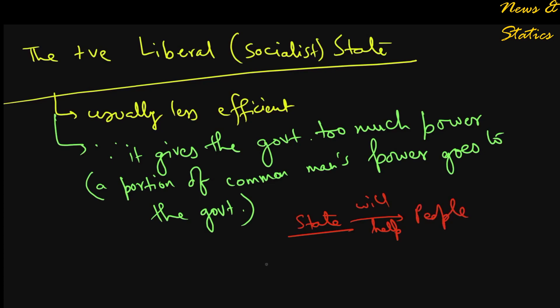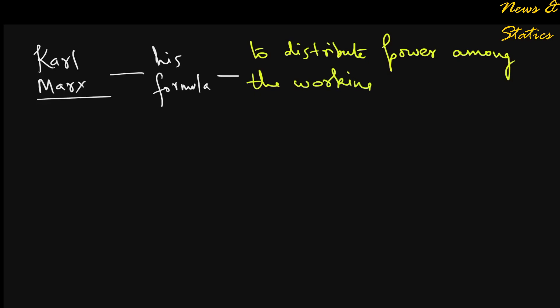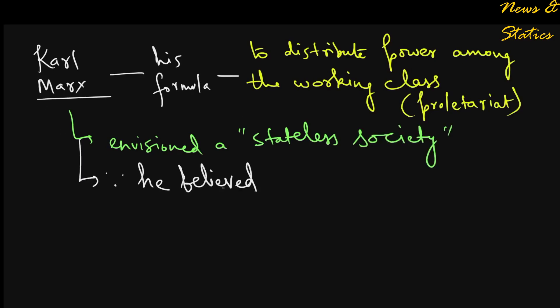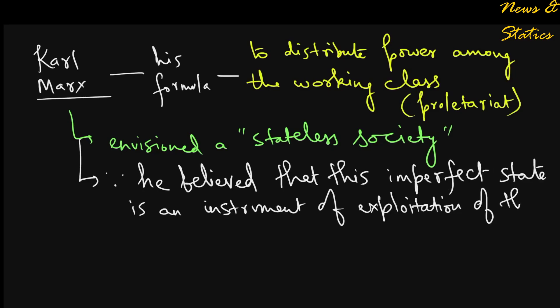Well, this disbalance of power is the cause of inefficiency. Karl Marx in the 19th century came up with his own formula. Marx suggested that power be distributed throughout the working class. He envisioned a stateless society because he understood that this imperfection of the state would not be solved, and he regarded state as an instrument of exploitation of the masses. A radical view.